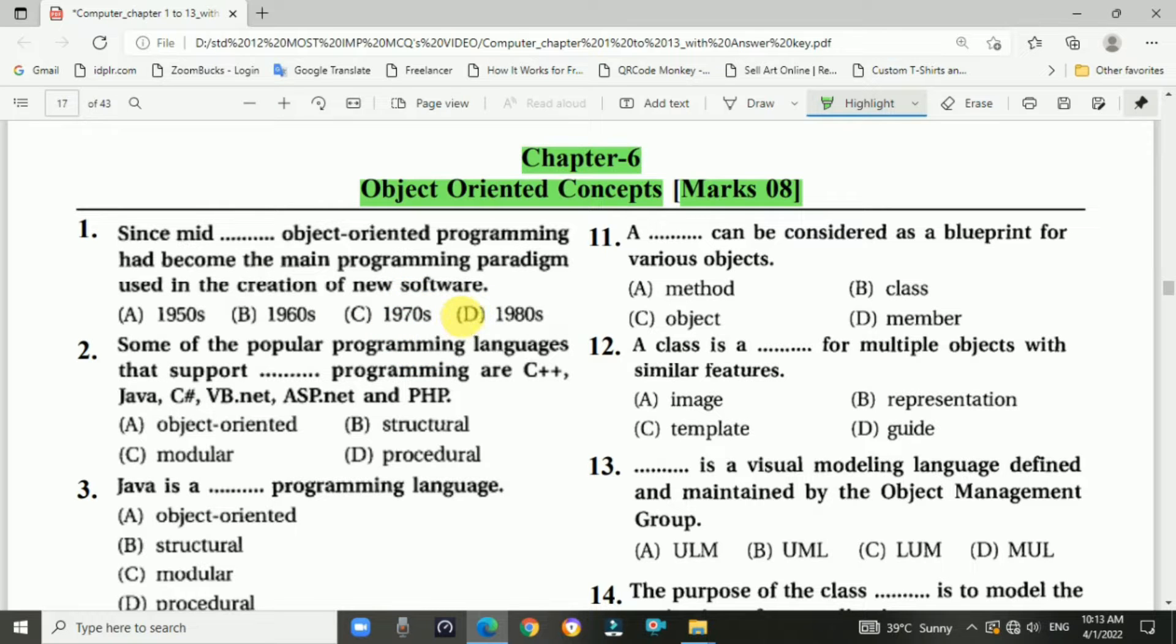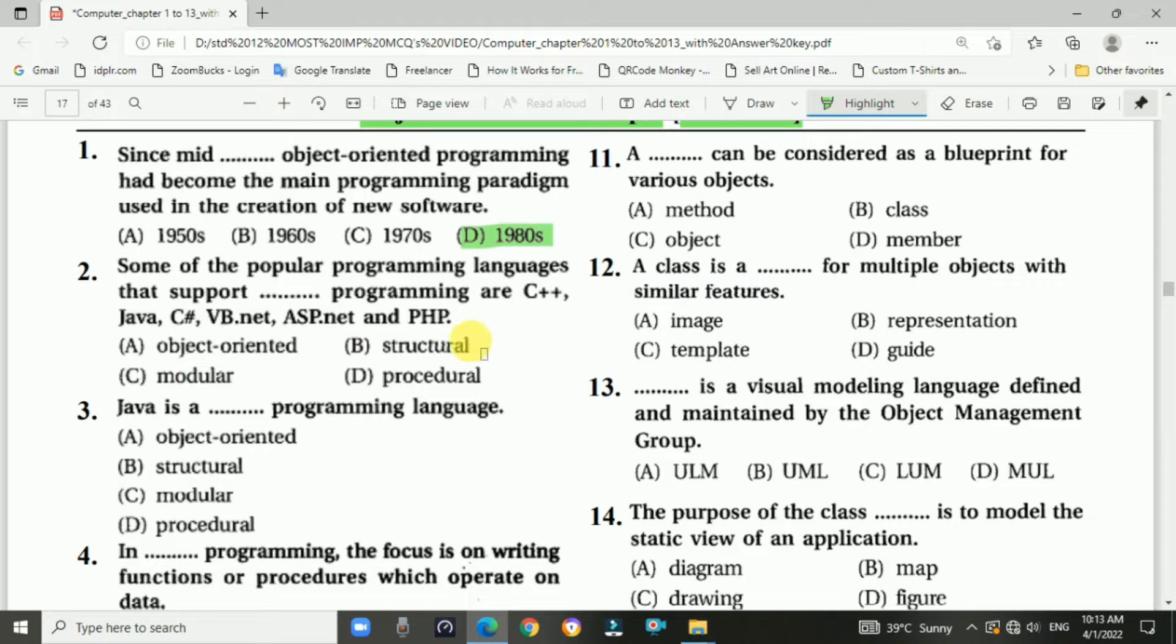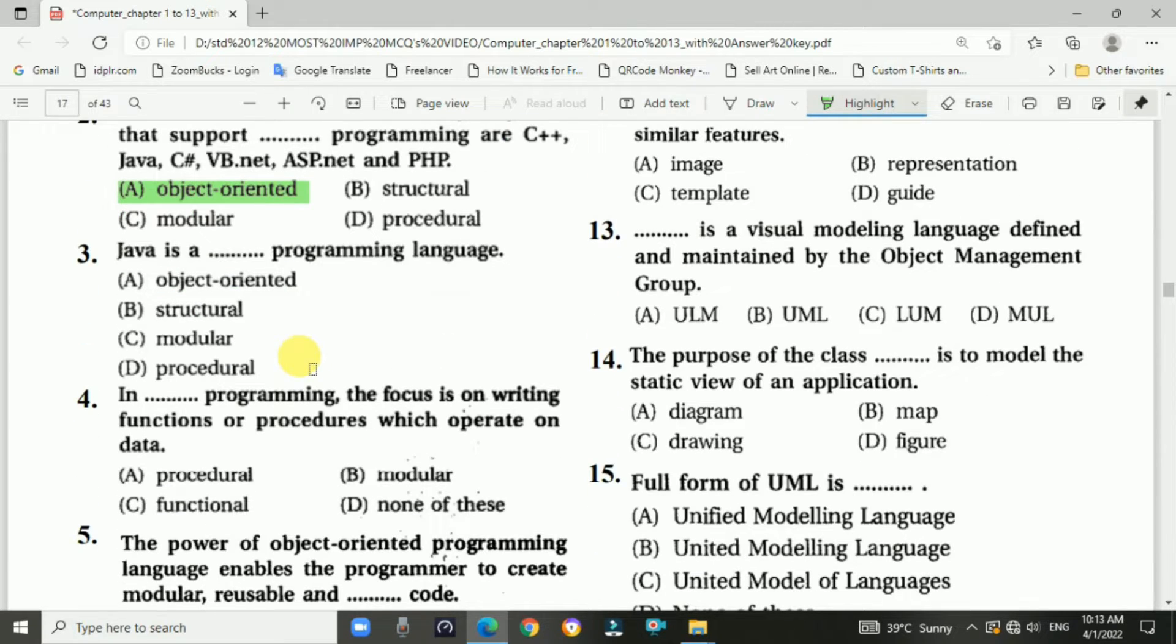Answer is 1980s. Question number two: Some of the popular programming languages that support blank programming are C++, Java, C#, VB.NET, ASP.NET, and PHP. Answer is object-oriented programming.